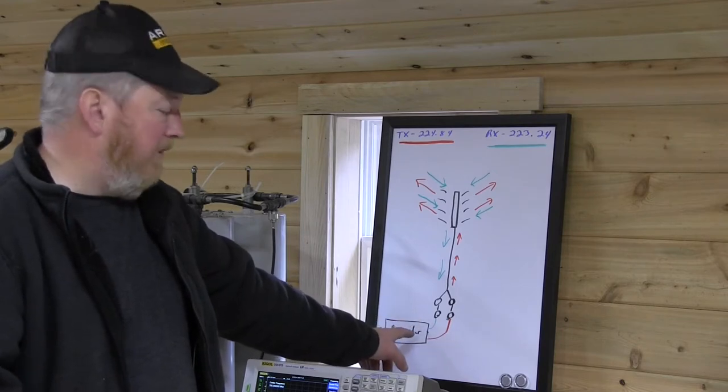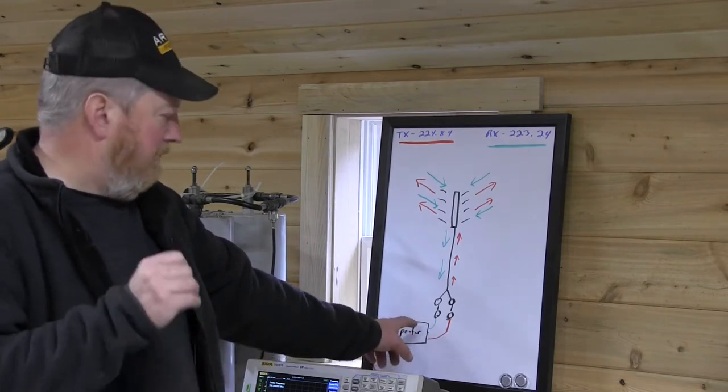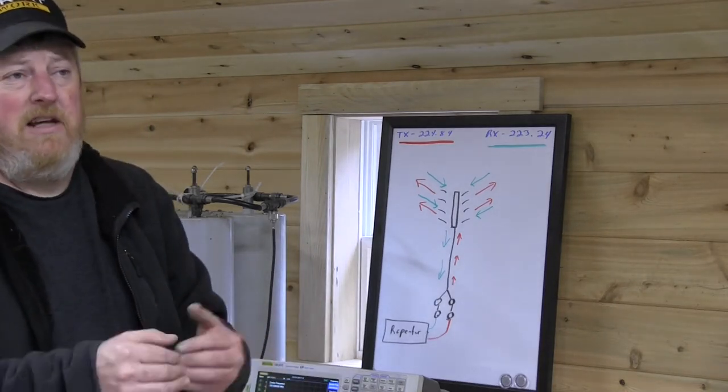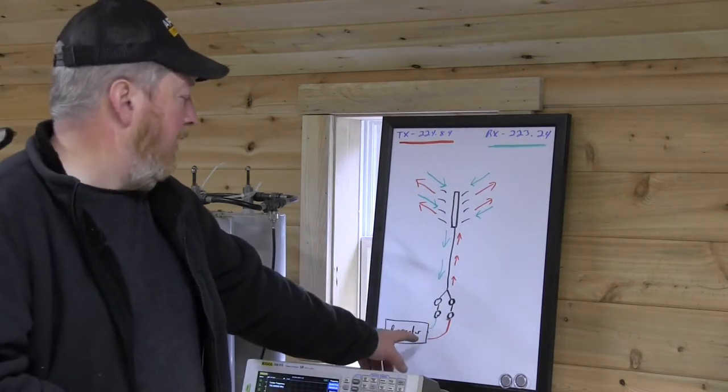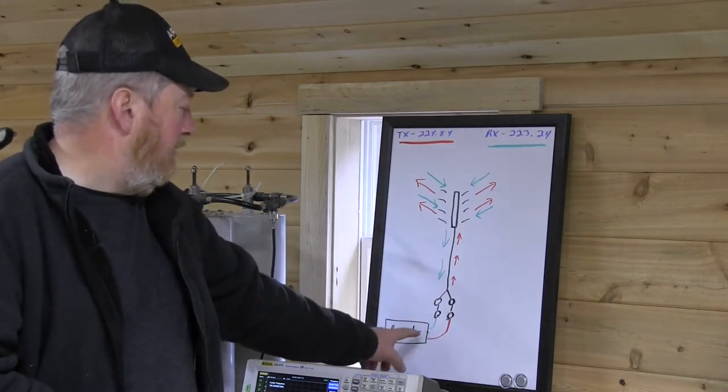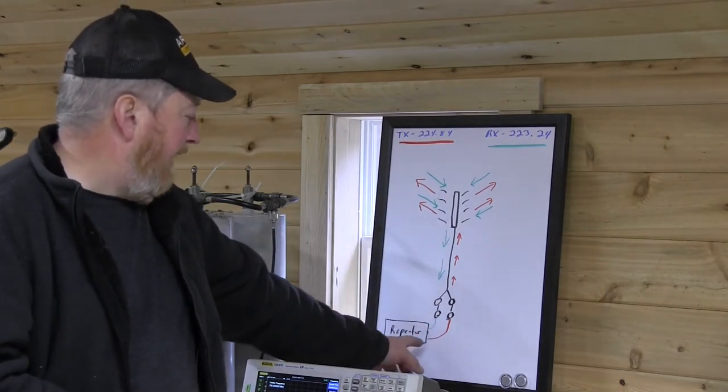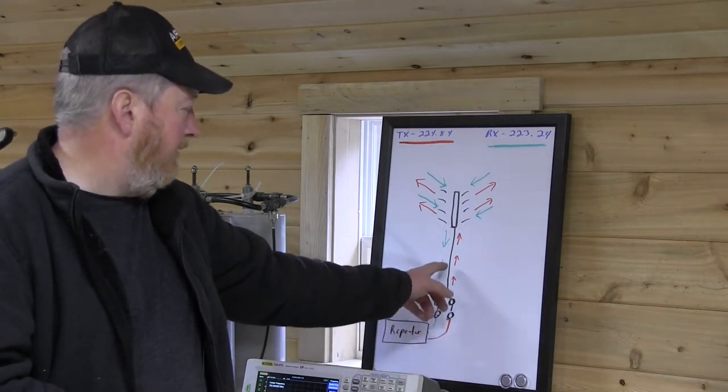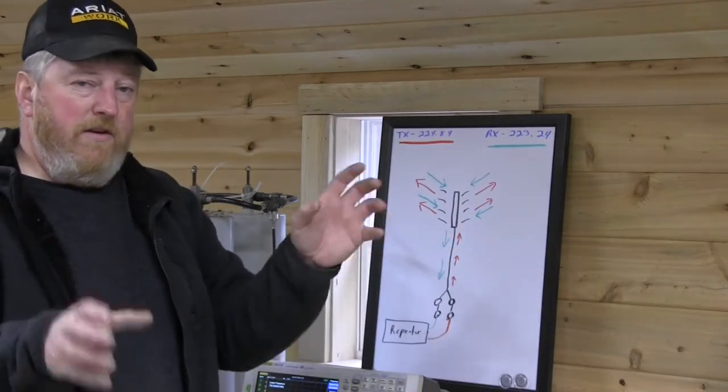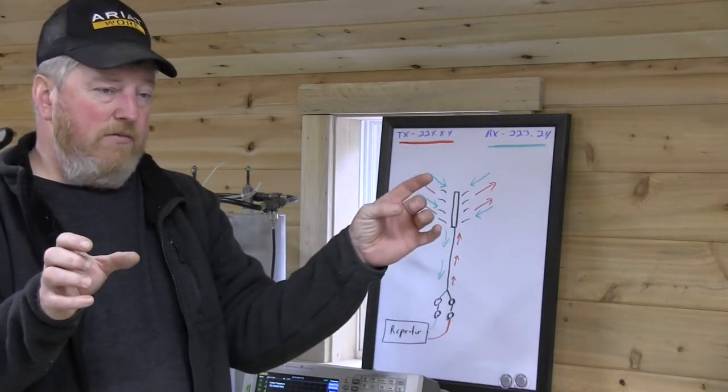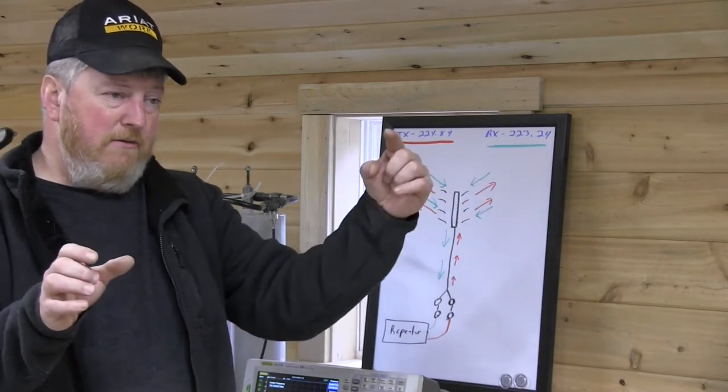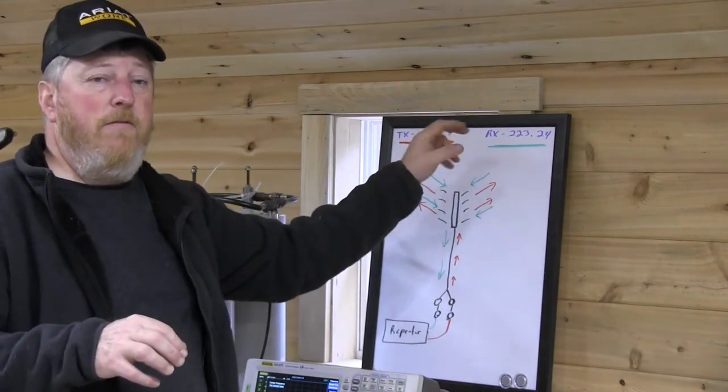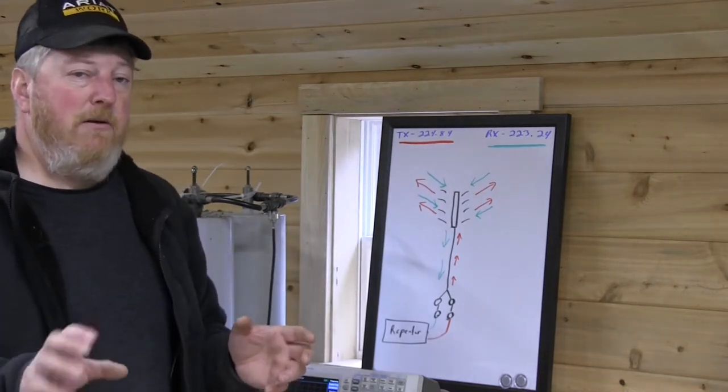The repeater sees that signal and immediately keys up and retransmits it almost exactly simultaneously. It's maybe a couple hundredths of a second delay. So as you're talking into the repeater, it's actually transmitting back out the red line through its own other two duplexers and up to the antenna. The other radio is listening on 224.84. That's called a split in amateur radio repeater world.